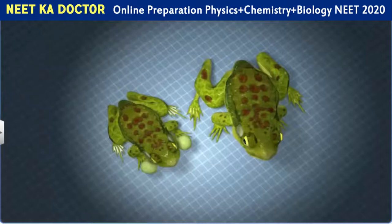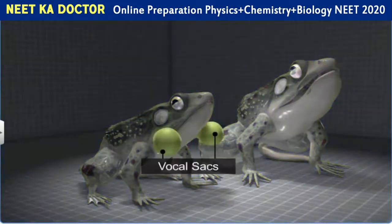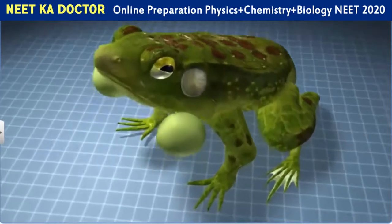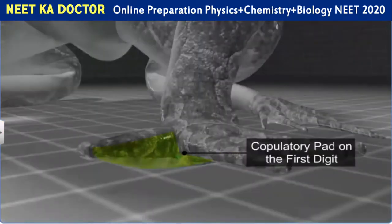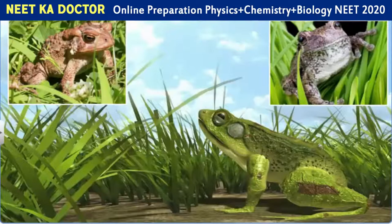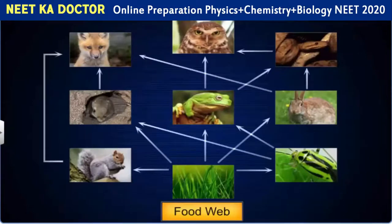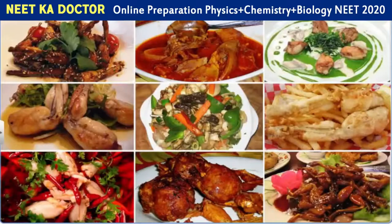In frogs, the sexes are separate, and certain features help to easily distinguish between a male and a female frog. Male frogs possess two vocal sacs on the lower side of their throat, which are used for croaking. They also have a copulatory pad on the first digit of their forelimbs. Both these organs are absent in female frogs. Although frogs are undesirable in residential areas, they are beneficial to farmers as they eat insects and protect crops. They serve as an important link in the food chain and food web in the ecosystem and thus maintain an ecological balance. However, in recent years, the population of frogs has been declining due to various human activities.